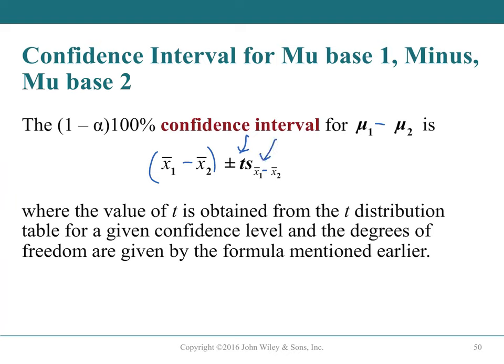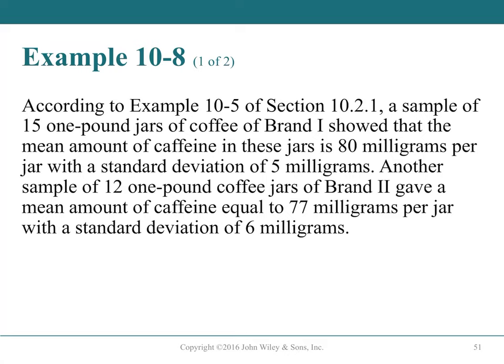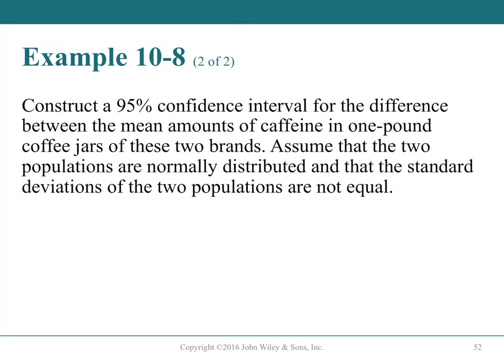Coffee caffeine example: a sample of 15 one-pound jars of brand 1 shows a mean of 80 mg caffeine per jar with s = 5; a sample of 12 jars of brand 2 shows mean = 77 mg with s = 6. Both are small samples; the problem states both are normally distributed, and standard deviations are assumed unequal.